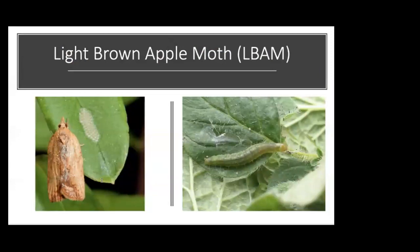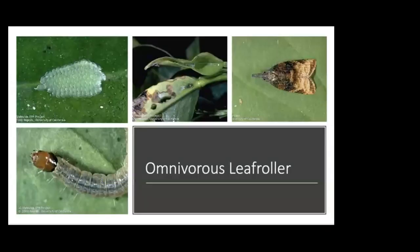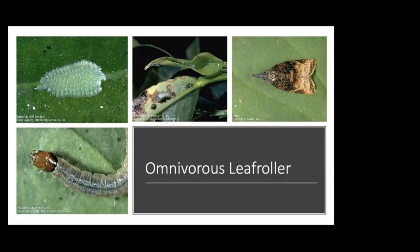Light brown apple moth, also known as LBAM, is very similar — it also folds leaves and produces webbing very much like orange tortrix. The feeding damage to early spring buds and feeding on clusters is similar as well, which is where trapping comes into play to figure out which species you're dealing with. Omnivorous leafroller is another moth pest of grapevines with similar behavior and feeding damage as orange tortrix and LBAM. Its larvae have chewing mouthparts and actually remove part of the leaf material and fold over the leaves.